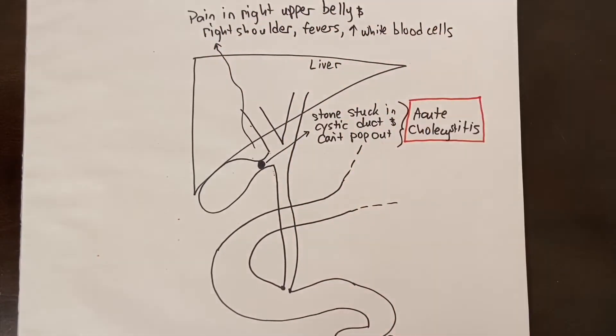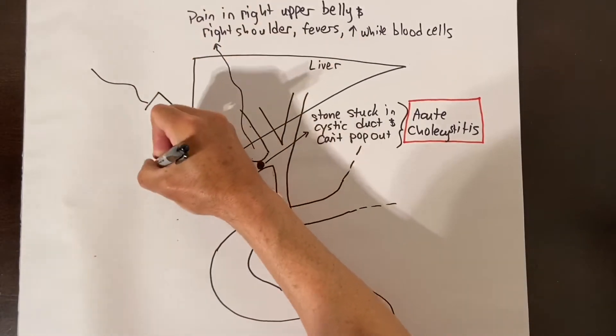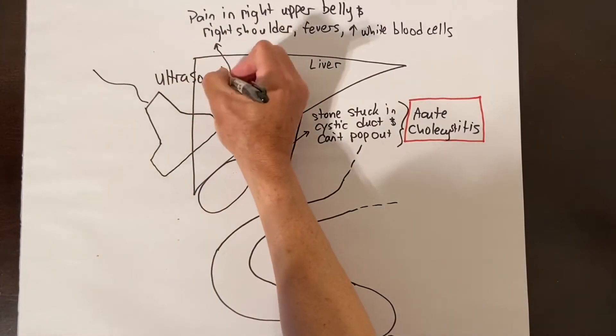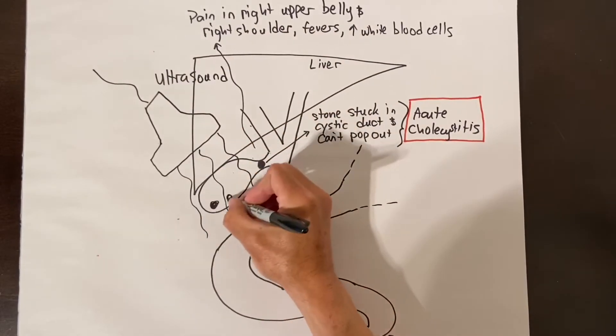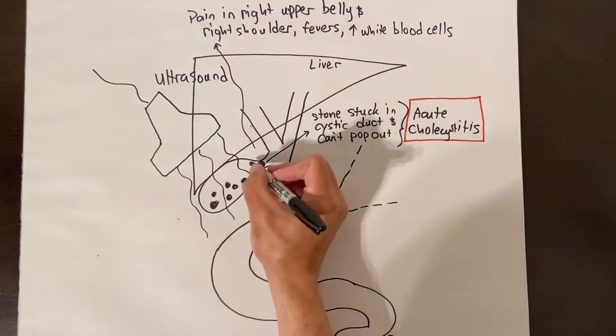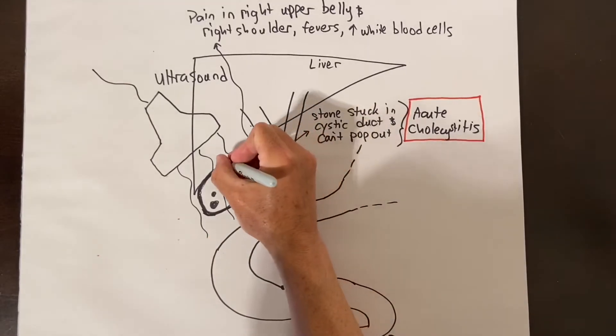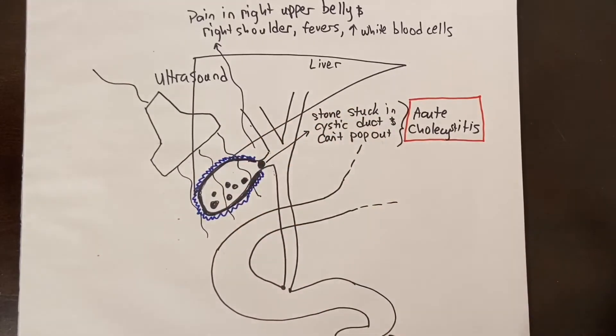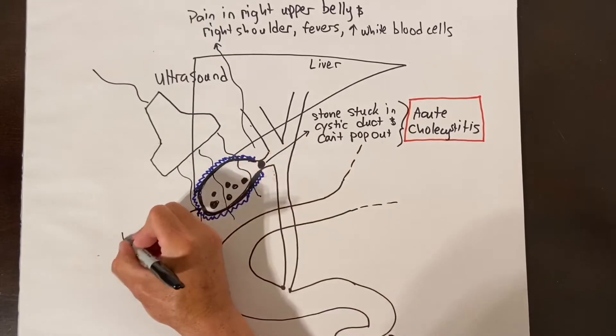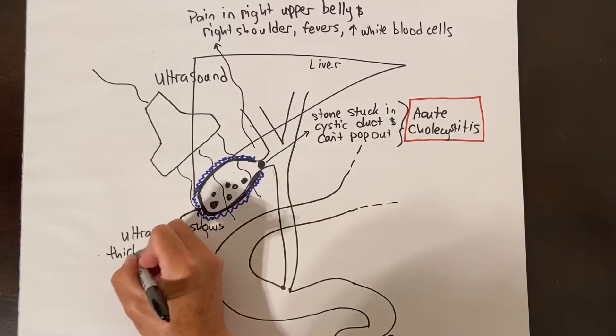The most common test to see cholelithiasis and acute cholecystitis is an ultrasound of the gallbladder. Acute cholecystitis or an infected gallbladder is differentiated on ultrasound by not only seeing the gallstones but also a thickened gallbladder wall with fluid around it and tenderness when the ultrasound is pressed right on it.